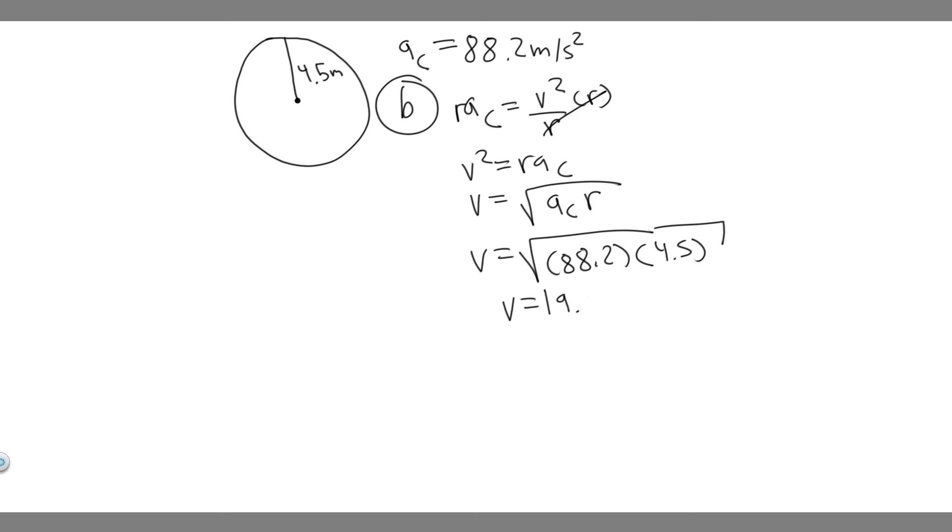You're going to get V equals 19.922. You can round to 19.9 if you want, and linear velocity is measured in meters per second. So this is your answer to B: the linear velocity at the acceleration of 88.2 is 19.9 meters per second.